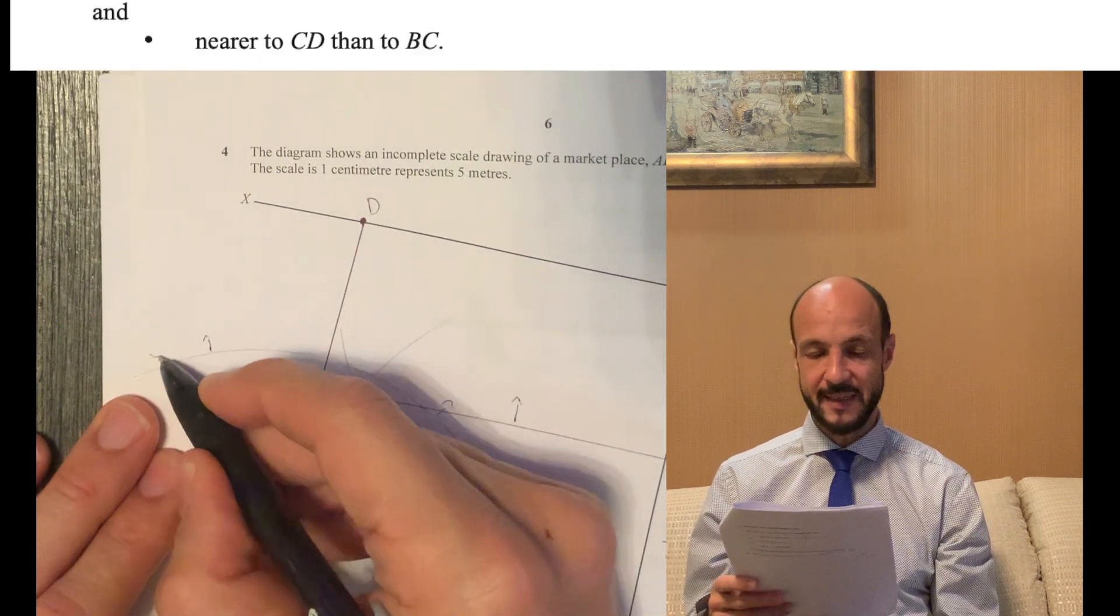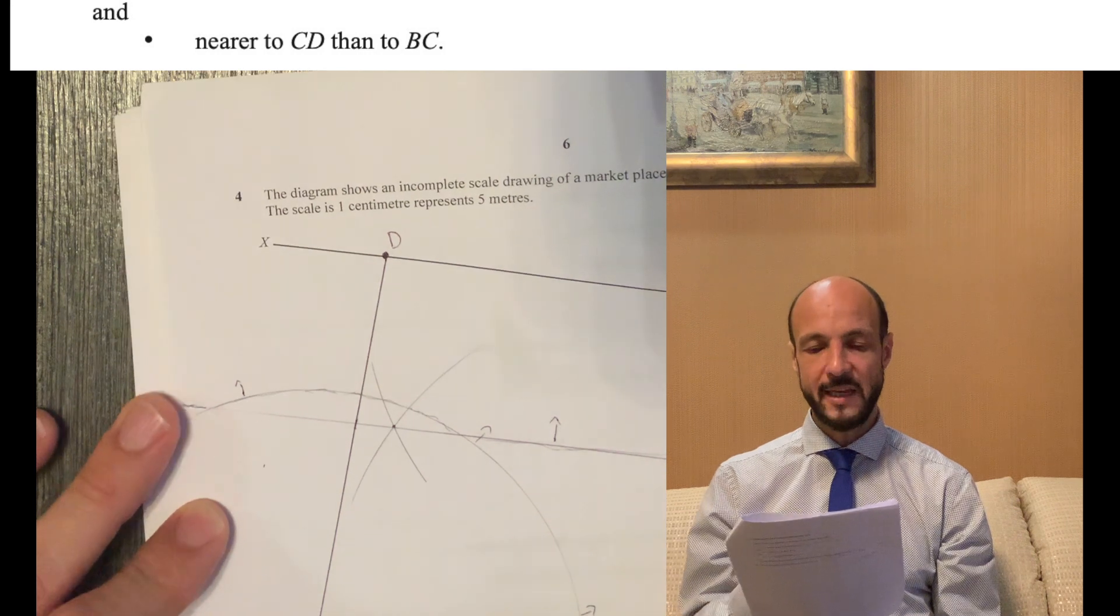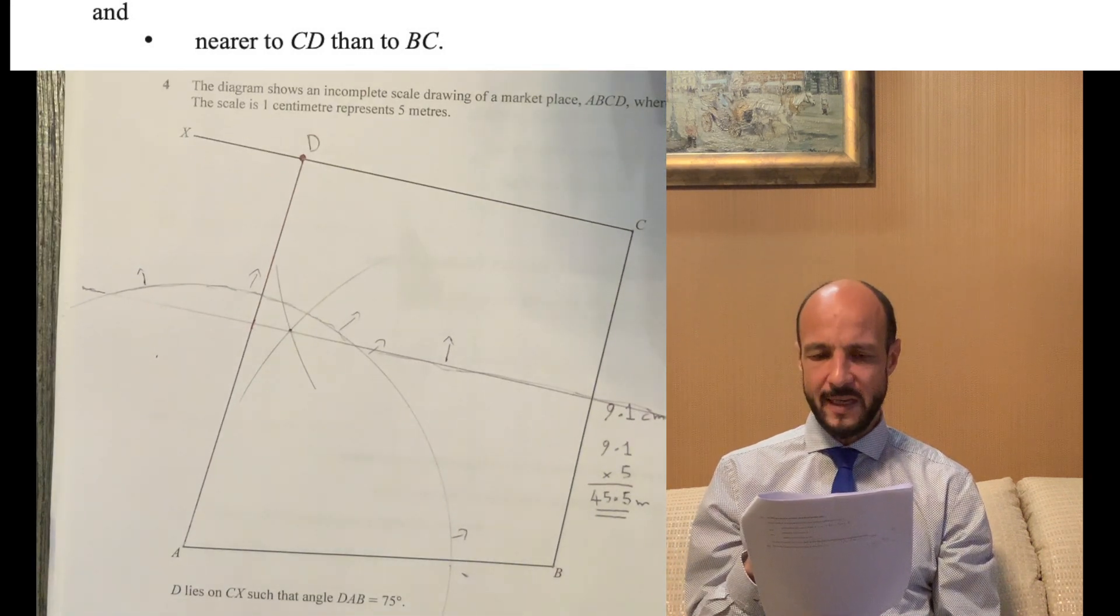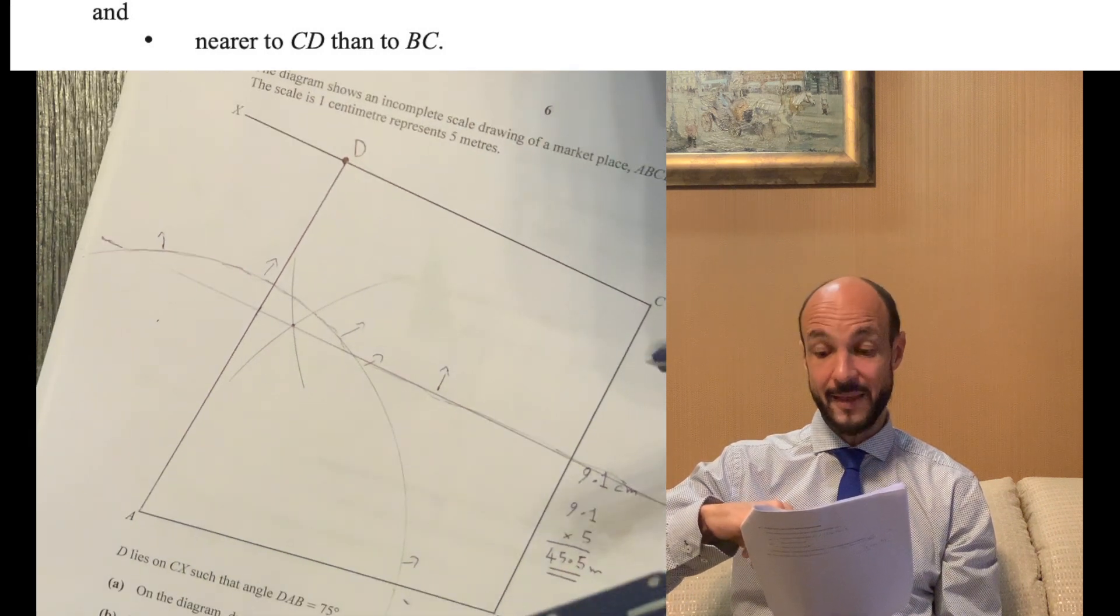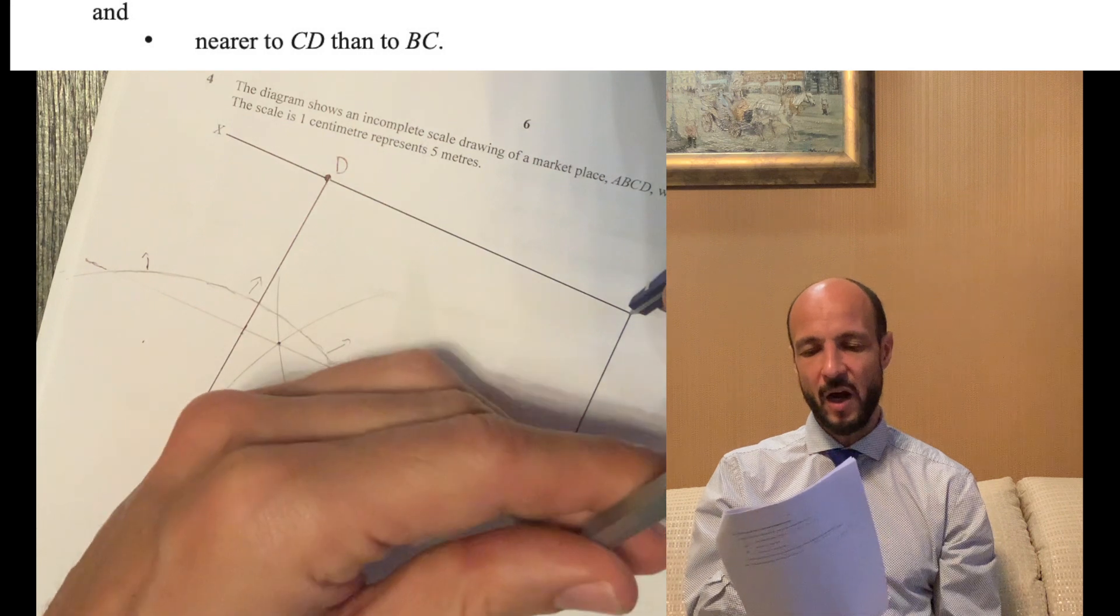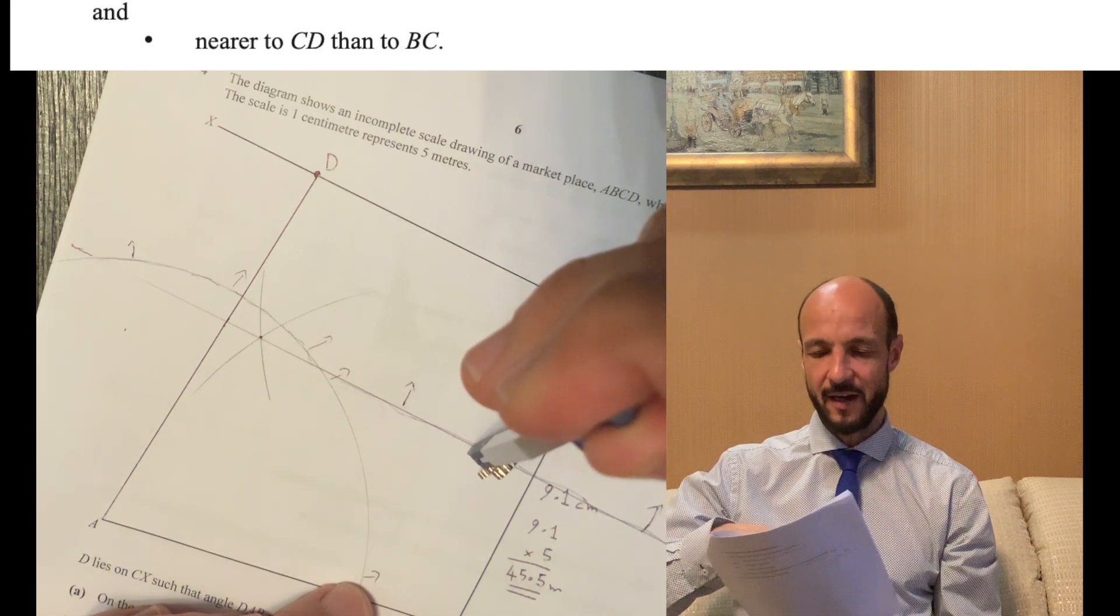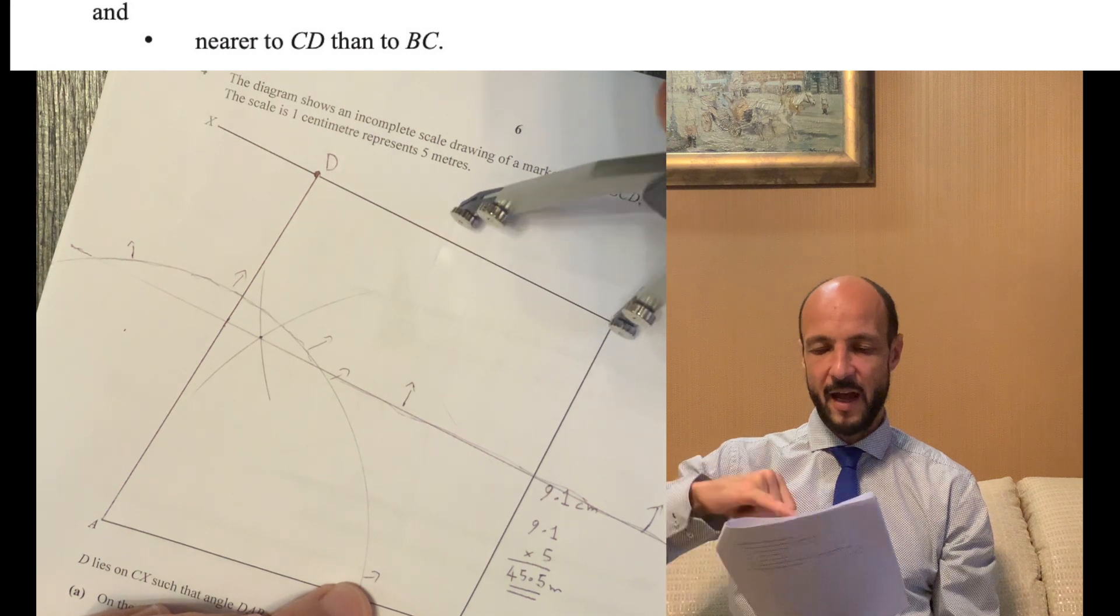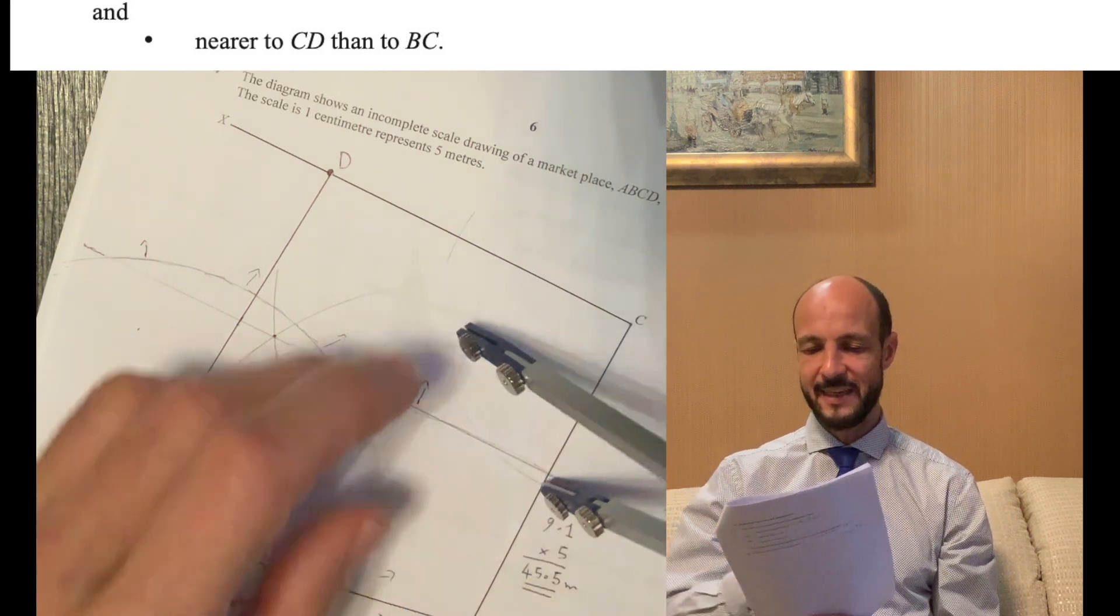And so in our third part, nearer to CD than to BC, well if we look, CD is one line, BC is another line. In order to be nearer to one than to the other what we need to do this time is to bisect the angle, we need to bisect the angle BCD. And so bisecting an angle, what we need to do is we need to draw an arc on our line CD of any length and draw the same arc with the same length on our line CB. This will give us two points. What we then do is between those two arcs we then put our compass as a center on one of the arcs and as a length as the other arc and we draw a second arc coming out from the extension of our arc. And we then put the center on the other point and draw a second arc, and where those two arcs join up we join that to the center point C and this will be our bisector.